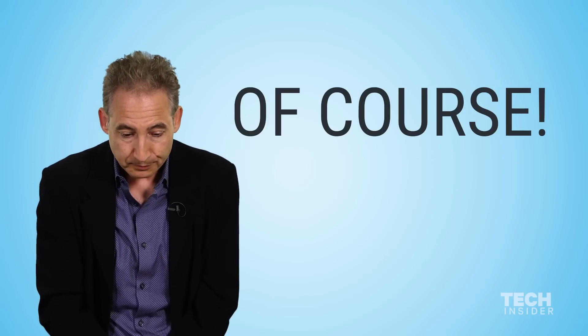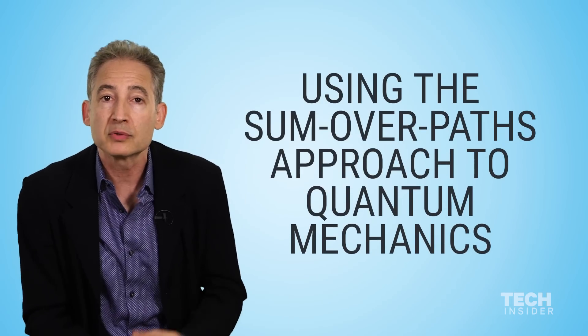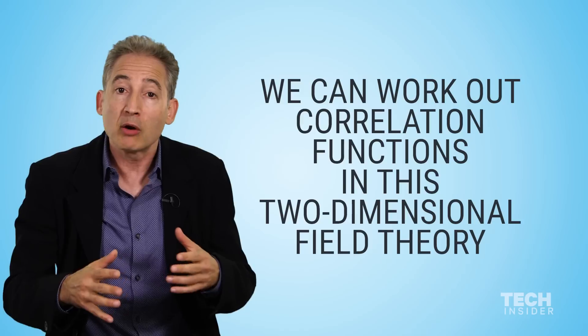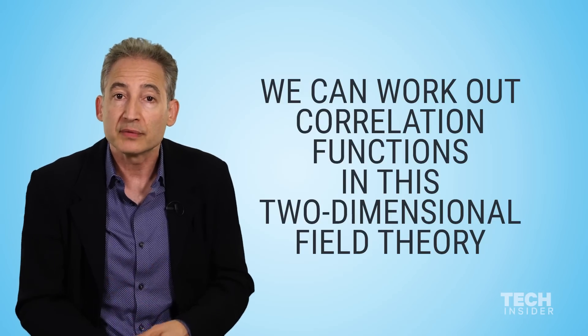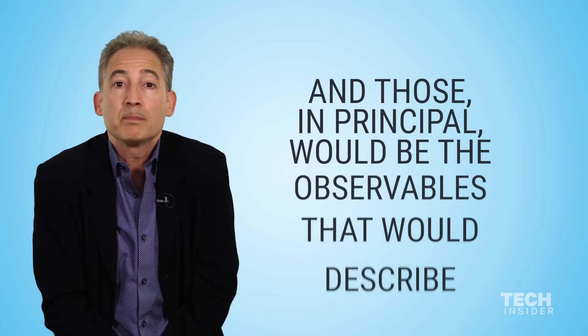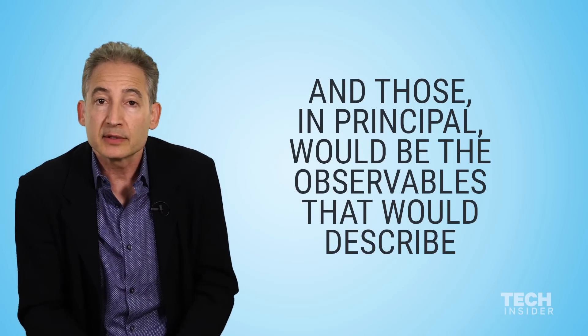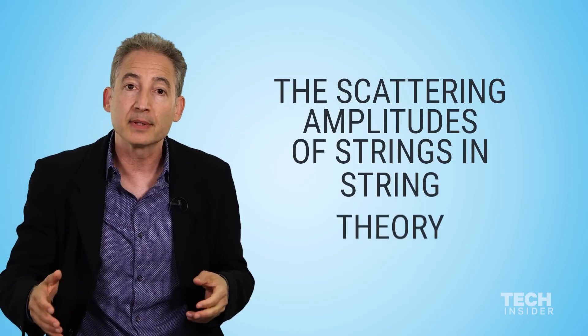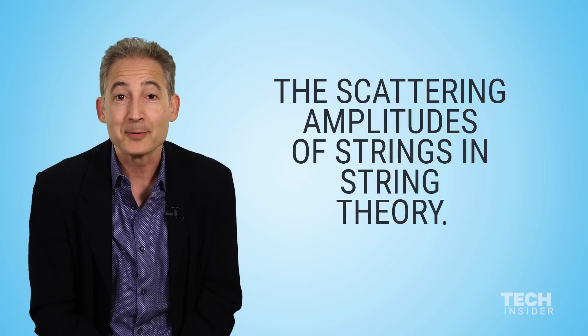And then by using the standard sum over paths approach to quantum mechanics developed by Richard Feynman, we can work out correlation functions in this two-dimensional field theory. And those, in principle, would be the observables that describe the scattering amplitudes of strings and string theory. How is that?